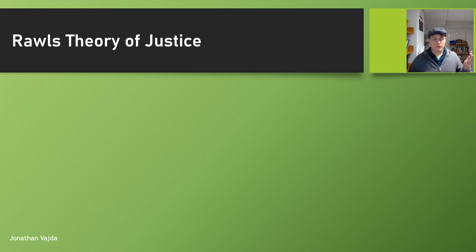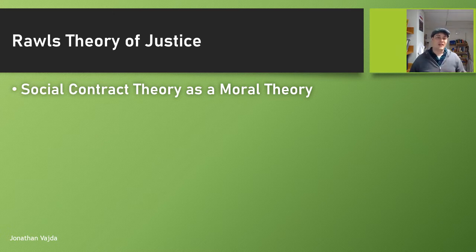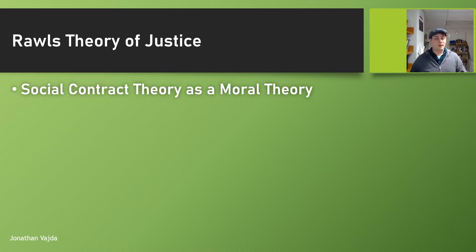For Rawls — this is John Rawls — his theory of justice falls in the tradition of social contract theory. Social contract theory is a theory of morality. It's trying to explain what makes something morally right or wrong and where you get your moral obligations. The idea is that just as we make contracts with one another to create legal obligations, there is some more basic idea here for how morality works, or at least a really good analogy to it.